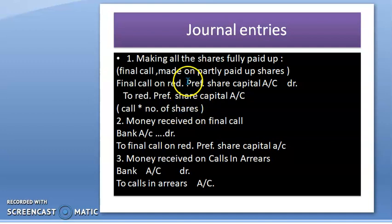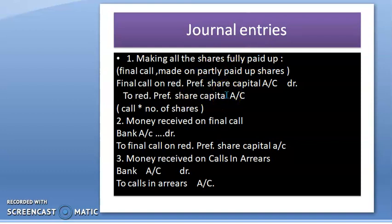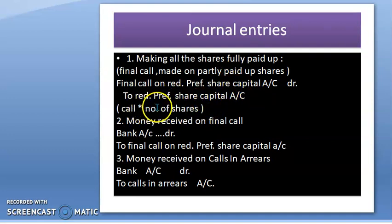So, what will the company do first? Under redeemable preference shares, the final call will be made. The journal entry will be: Final Call on Redeemable Preference Share Capital Account Debit to Redeemable Preference Share Capital Account. The amount is call amount multiplied by number of shares. The narration will be written as: being final call on redeemable preference share capital due.